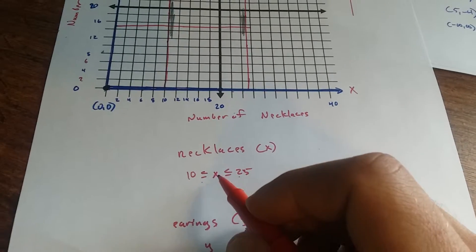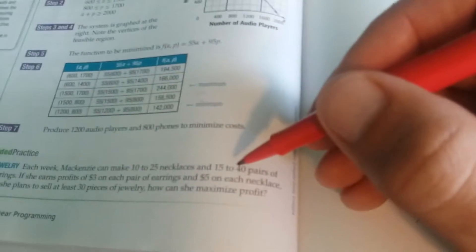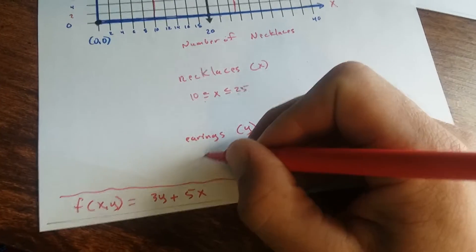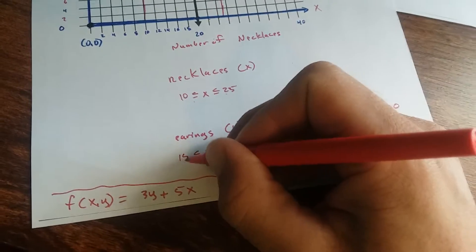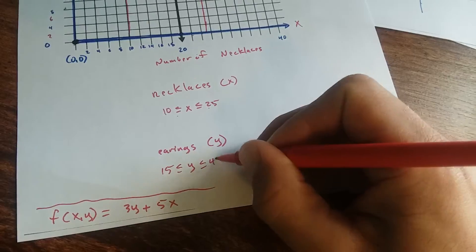So necklaces, we can have between 10 and 25. Earrings, okay, 15 to 40 pairs of earrings. So Y has to be between 15 and 40.